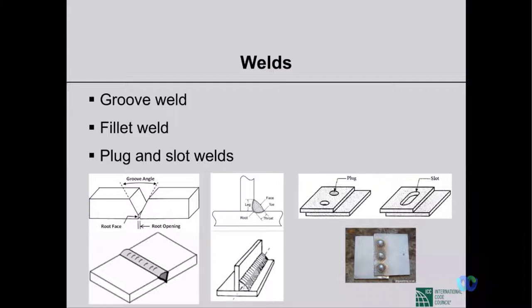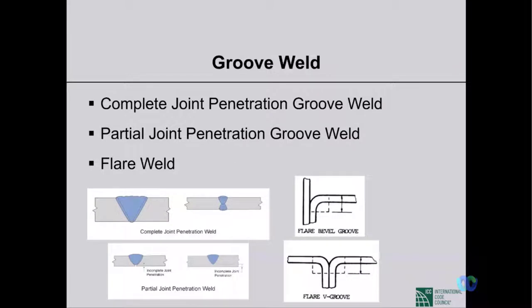The third type is plug weld and slot weld. In plug weld, we keep a hole in one plate and weld into that hole to create a plug so the plates don't move. If the hole is elongated rather than circular, it is called a slot weld.